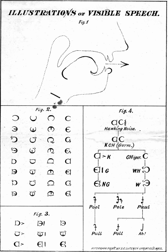Visible speech is a system of phonetic symbols developed by Alexander Melville Bell in 1867 to represent the position of the speech organs in articulating sounds. Bell was known internationally as a teacher of speech and proper elocution and an author of books on the subject. The system is composed of symbols that show the position and movement of the throat, tongue, and lips as they produce the sounds of language, and it is a type of phonetic notation. The system was used to aid the deaf in learning to speak.